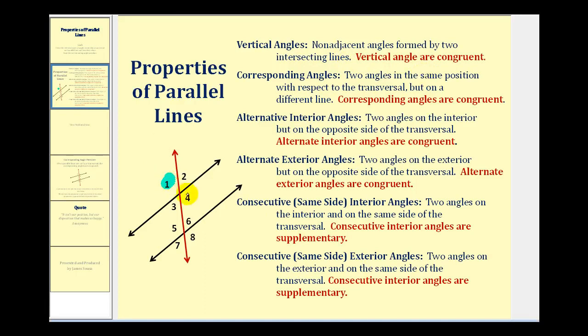So angle one and four are vertical angles and congruent. So are two and three, five and eight, and six and seven. These are vertical angles, and they are also congruent angles.